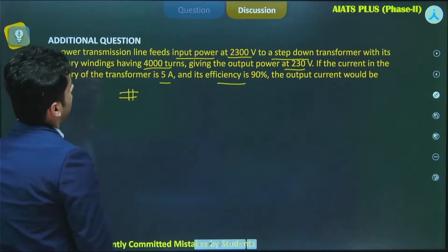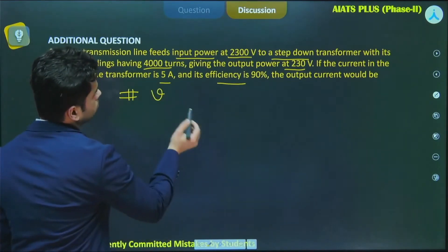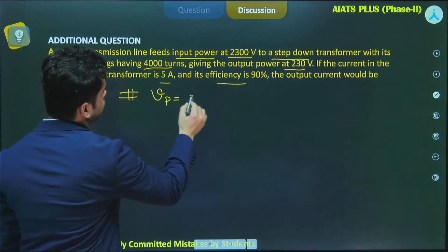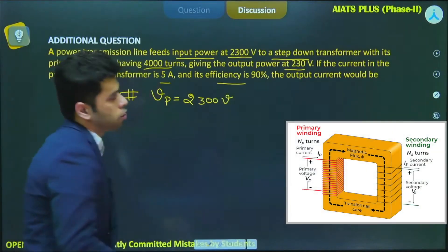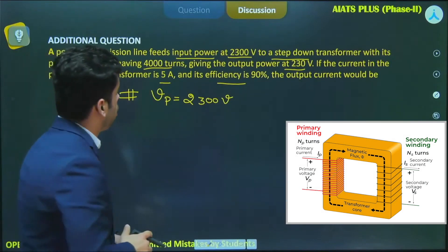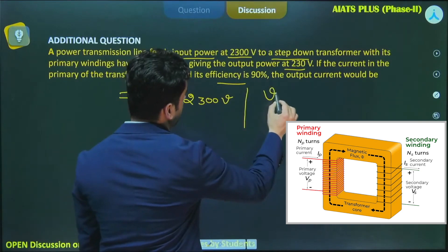Let me put the data in the problem. It feeds input power at 2300 volt, so I'll write Vp to be equal to 2300 volt. If someone has got the answer, put your answer in the comment box.